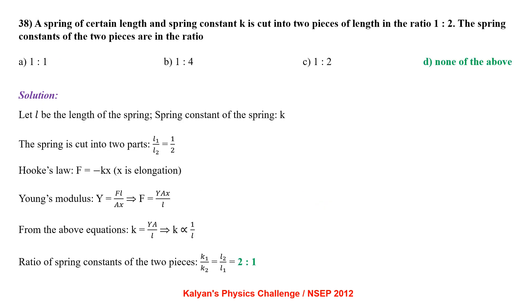A spring of spring constant k is cut into 2 pieces of lengths in ratio 1:2. Using Young's modulus: F = YAx/L, and Hooke's law F = kx, we get k = YA/L, so k ∝ 1/L. Since L₁:L₂ = 1:2, the ratio of spring constants k₁:k₂ = 2:1.